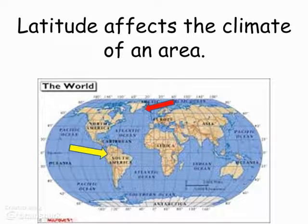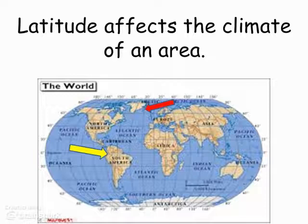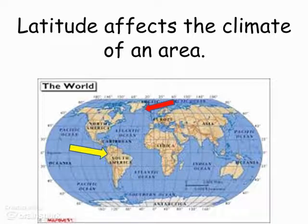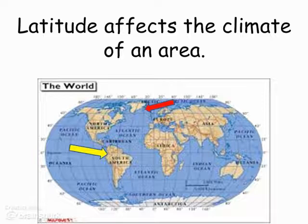Everything above the equator is north latitude; everything below is south latitude. Now that we know what latitude is, let's see how it affects climate. On this map, the yellow arrow marks a place right around the equator — zero degrees — which has a hot climate year-round. The red arrow points to somewhere around Greenland, much farther from the equator, and that tells us it's going to have a much colder climate. The farther you are from the equator, the colder your climate will be.